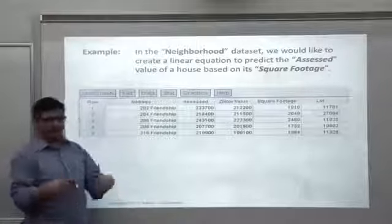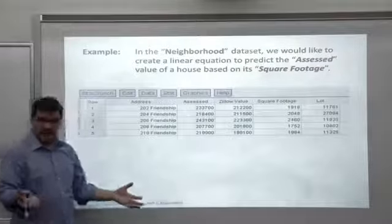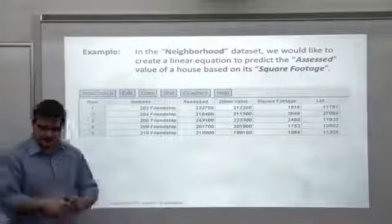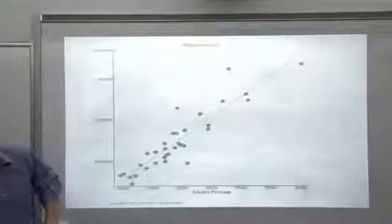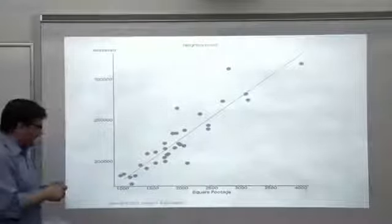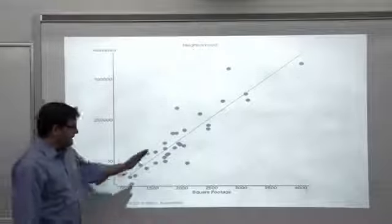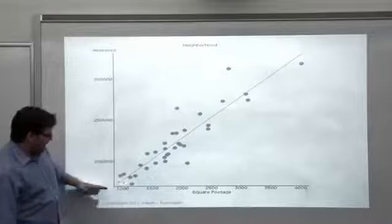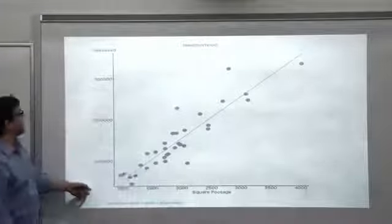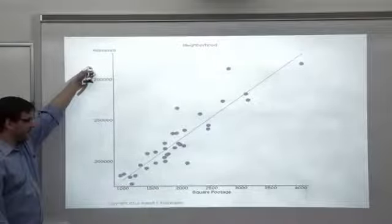In this dataset, it looks like 33 houses. We're going to create a linear equation based on how big the house is (square footage) to predict its assessed value. In our heads we can think, well, the bigger the house, the more the house is probably assessed at. So we'd expect a positive relationship.